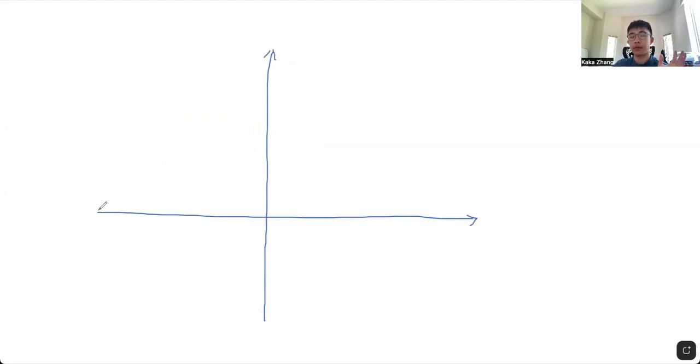The axis that is horizontal, also called the x-axis, represents the domain. And the axis that is vertical, or the y-axis, represents the range.